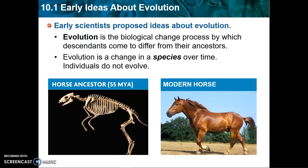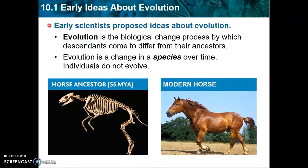Evolution is a biological process of change. We're talking about how the descendants are different or have changed from what the ancestors were. The simplest definition you can have for evolution is that it is a change in a species over time. It is not an individual that evolves — it's all about an entire species leaving behind offspring, and the traits that become common in the offspring are the traits you see developing in the species as a whole.